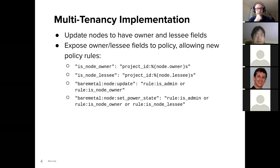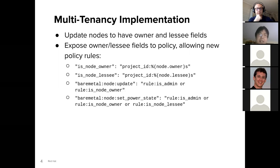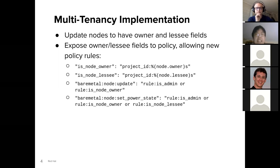The first thing we did is we updated nodes to have owner and lessee fields. Ironic nodes already had the owner field, but it was purely informational. Next, we exposed owner and lessee fields to policy. In OpenStack, policy is a set of roles that determines whether a user's API request is going to be accepted or rejected. By exposing owner and lessee fields to policy, we can add two new roles — is_node_owner and is_node_lessee — which determines whether the person making the API request is the owner or the lessee of a given node.